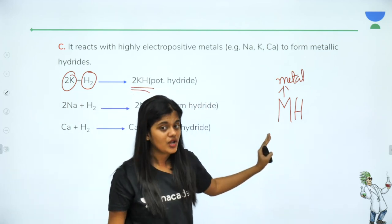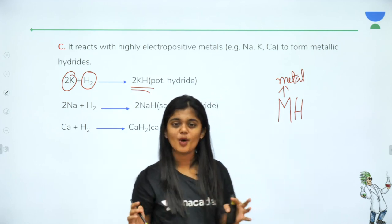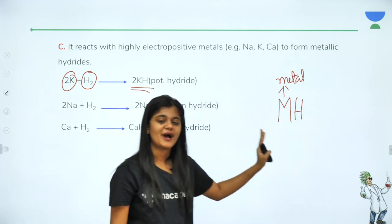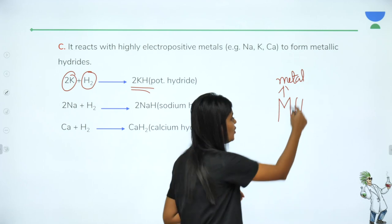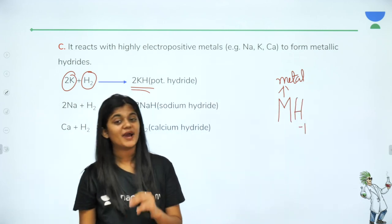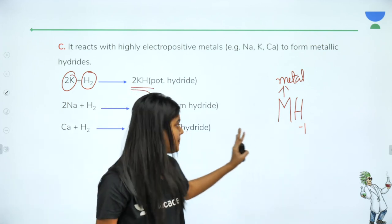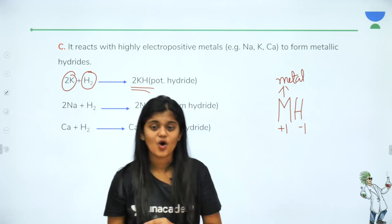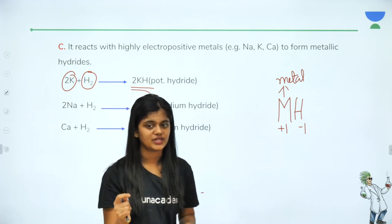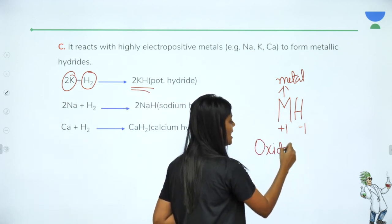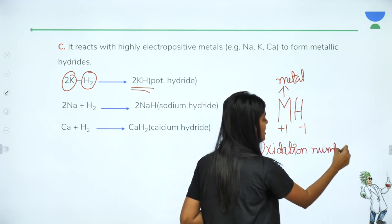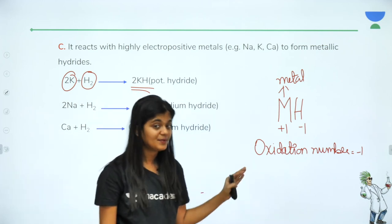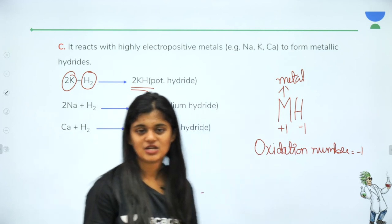An important point: hydrogen's common valency is +1 (electropositive). However, when combined with metals, hydrogen's charge becomes −1, because metals have the highest electropositivity and always lose electrons. So in all other cases the oxidation number of hydrogen is +1, but when combined with metals (in metallic hydrides) its oxidation number is −1. Remember: hydrogen's oxidation number is always +1 except in metallic hydrides where it is −1.